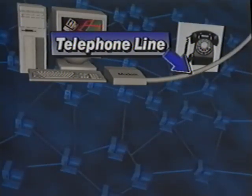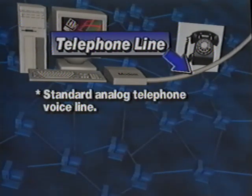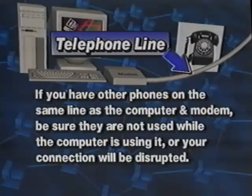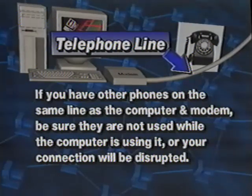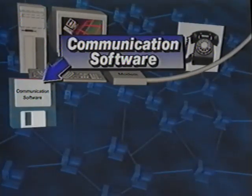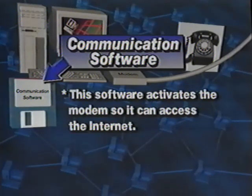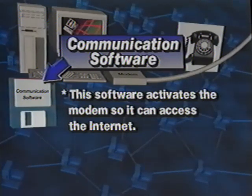Our next item is a telephone line, which will give us the communication path into an internet access point. Suzanne is using a standard analog telephone voice line. If you have telephone extensions in the house, make sure nobody picks up another receiver while our computer is using it, or your connection will be seriously disrupted. Communication software is the next requirement. This software activates the modem and it's often supplied along with it.